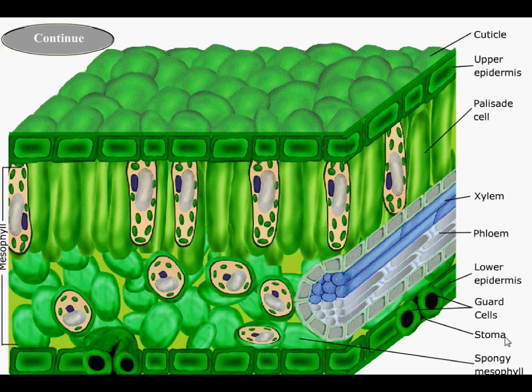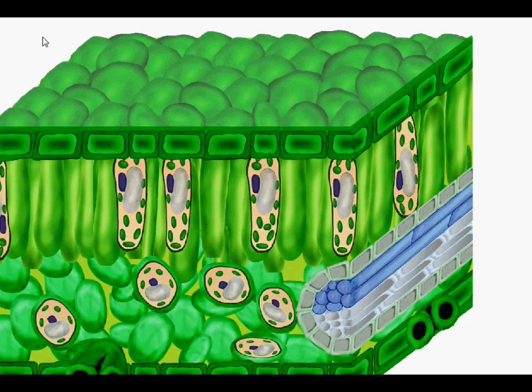These openings are called stomata, or singular would be stoma. Here are those veins you typically see—the vascular tissue consists of two parts. Xylem on top in blue transports water and minerals throughout the plant. The bottom part is phloem, which transports food.